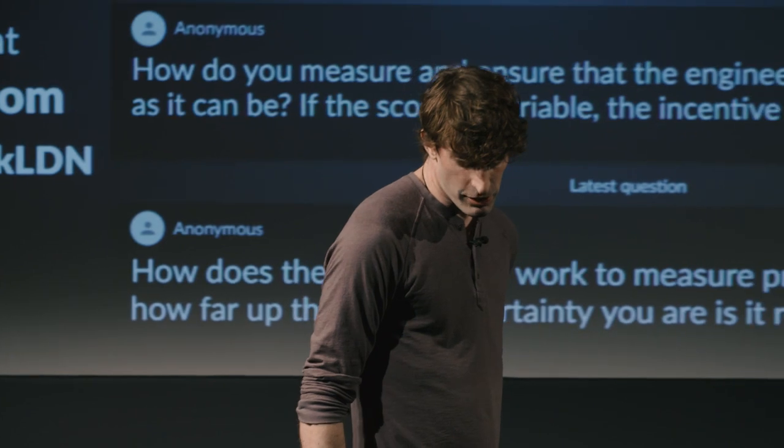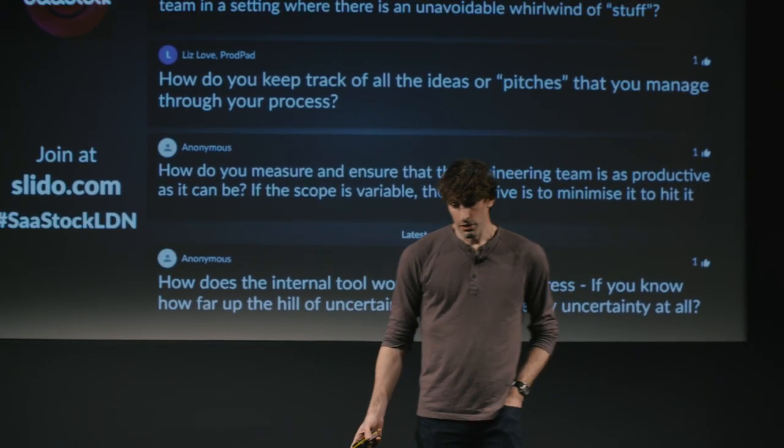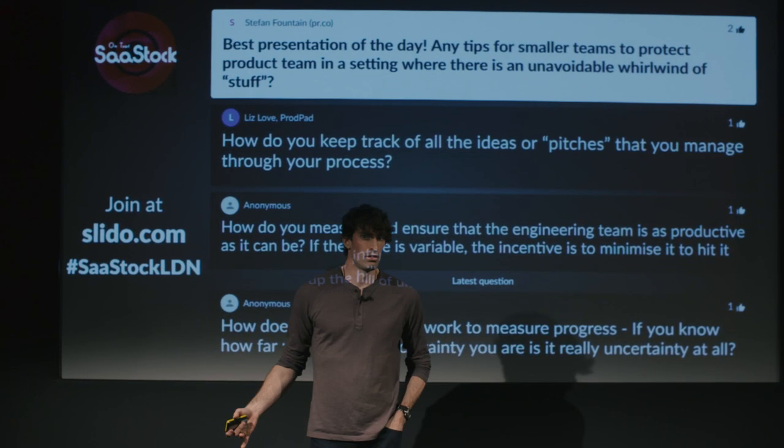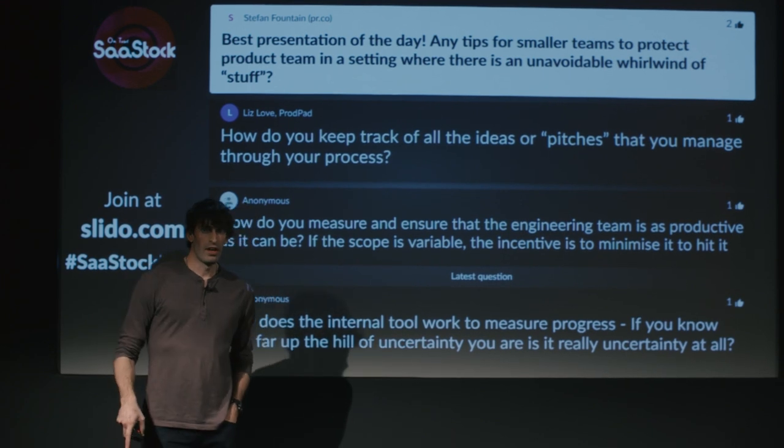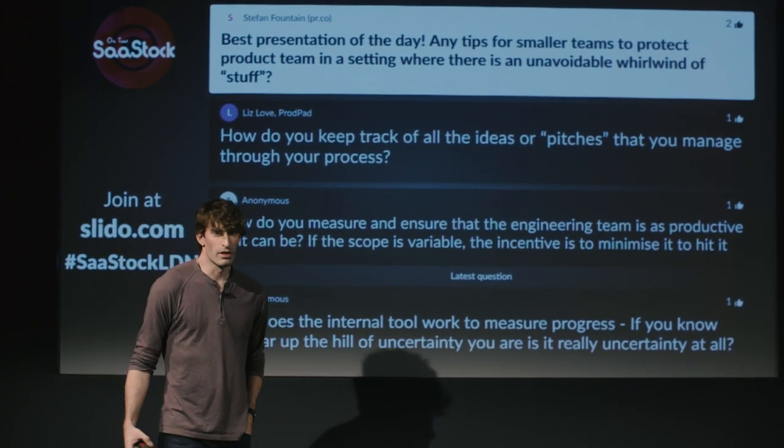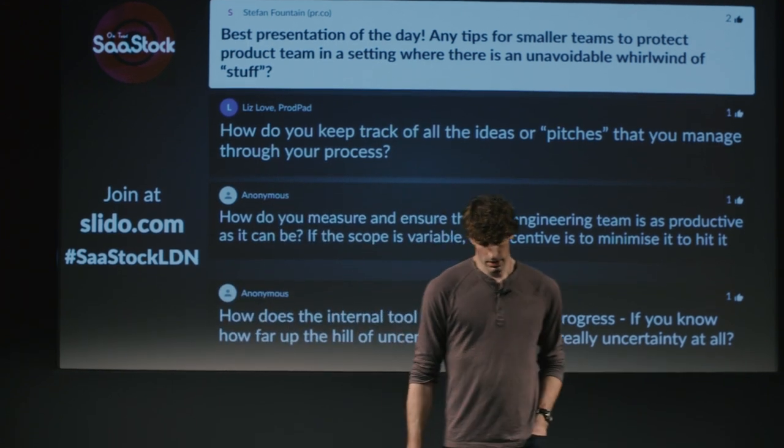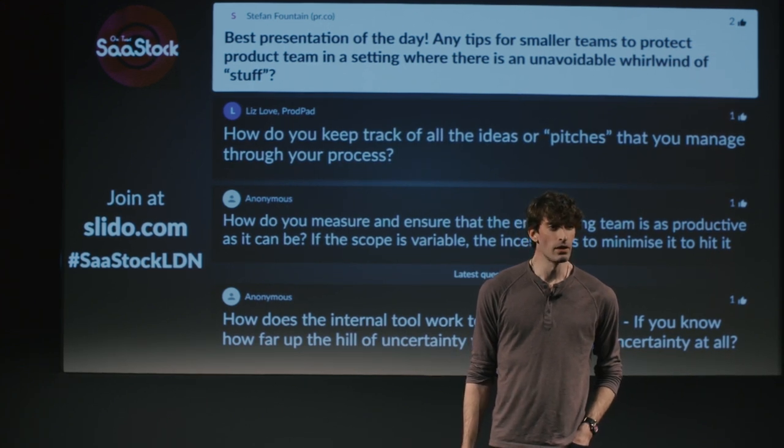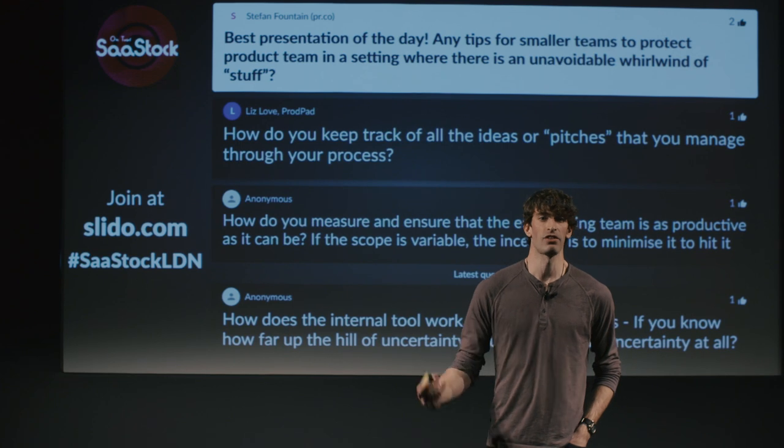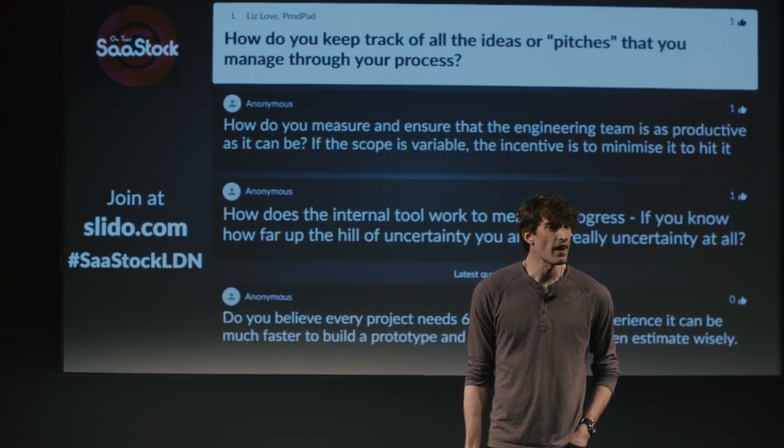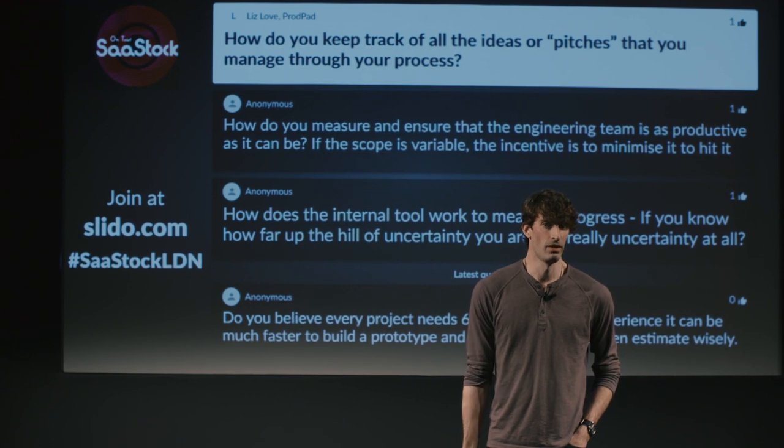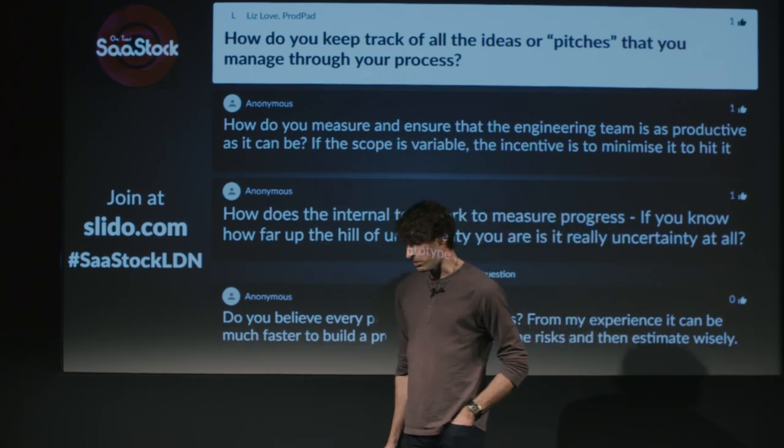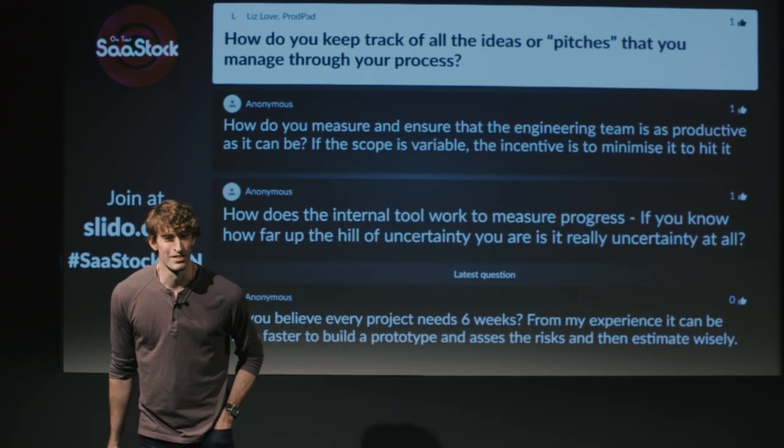Any tips for smaller teams to protect product team in a setting? Look, there's no unavoidable whirlwind of stuff. Who's the boss? Whoever is the boss can do this. If you're not the boss, then you have to live with a boss you don't like. Is that clear? It's a decision. It's a resource allocation decision. So if you're the boss, you can decide what people spend their time on. It's a decision. That's why it's called deliberate resource allocation. It's really important. How do you keep track of all the ideas? We don't. Freedom. Enjoy.